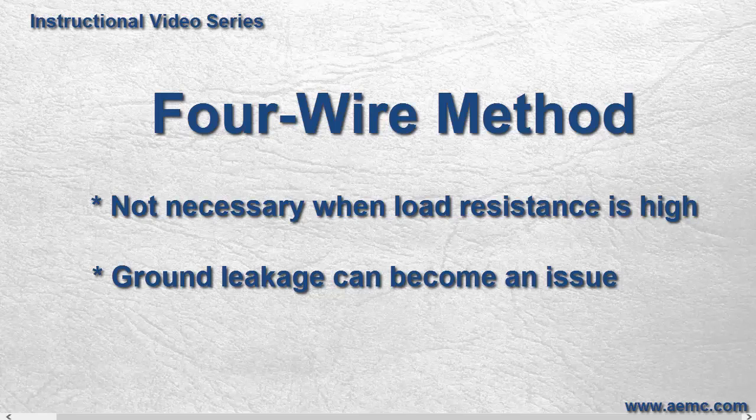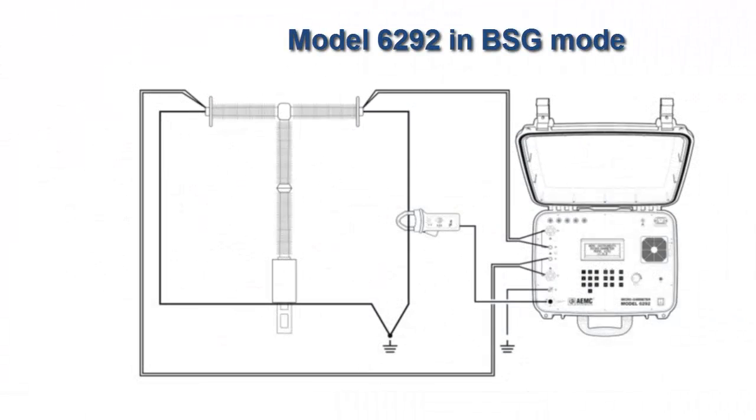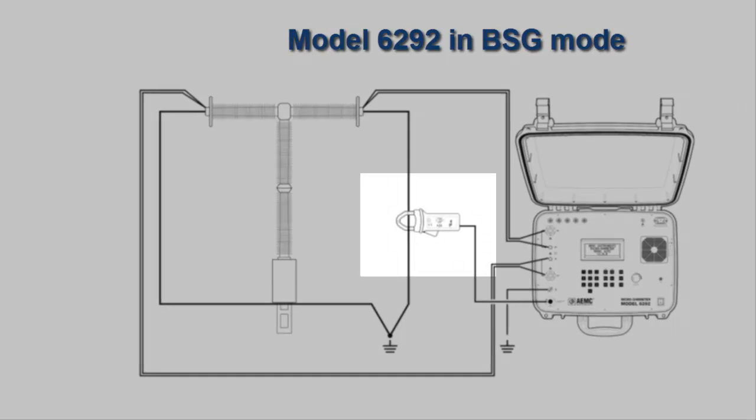The Model 6292 mitigates the problem of ground leakage by offering a mode called Both Sides Grounded, or BSG mode. In this mode, the Model 6292 uses an external DC current probe to measure and eliminate ground leakage current from the total test current.